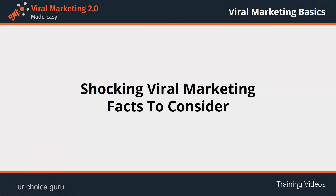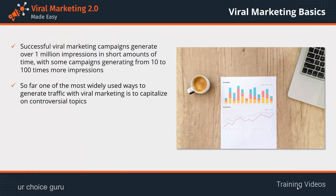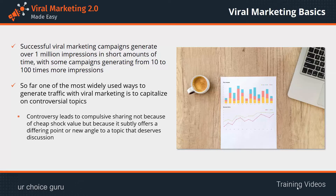Shocking viral marketing facts to consider. Successful viral marketing campaigns generate over 1 million impressions in short amounts of time, with some campaigns generating from 10 to 100 times more impressions. One of the most widely used ways to generate traffic with viral marketing is to capitalize on controversial topics, as that is the easiest way to spark online conversations and get people to take sides. Controversy leads to compulsive sharing — not because of cheap shock value, but because it subtly offers a differing point or new angle to a topic that deserves discussion.